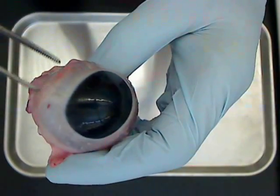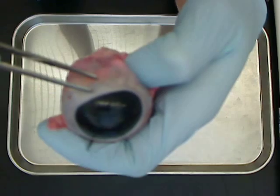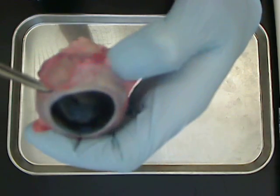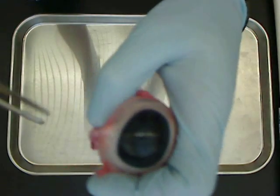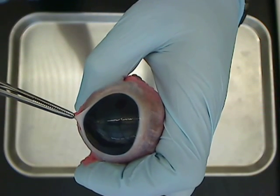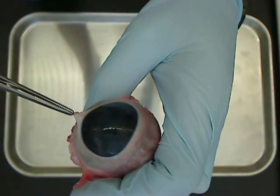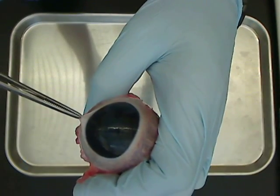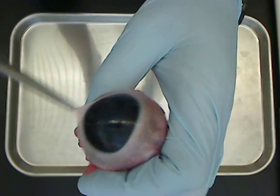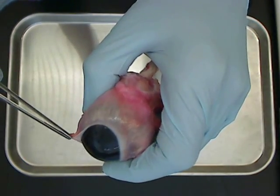You have the white part out here which is called the sclera. And because this one's nice and fresh, we can try to lift up and show you the conjunctiva. I trimmed off most of it kind of by accident when I was getting it out of the cow's head. But this that I'm pulling up off here is conjunctiva.